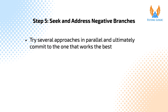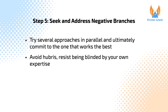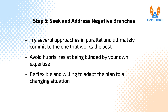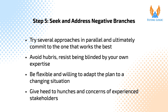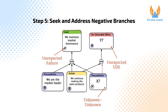If possible, try several approaches in parallel and ultimately commit to the one that works the best. Avoid hubris, nurture an organizational culture of humility, and resist being blinded by your own expertise. Be flexible and willing to adapt the plan to a changing situation. Give heed to the hunches and concerns of experienced stakeholders, even if those reservations are not clearly articulated. Even inarticulate reservations can be added to a transition tree as unspecified preconditions and removed later if they fail to manifest. Don't add unknown unknowns at every possible place, only where a strong but unspecific reservation has been expressed. Unknown unknowns can also be added as part of an assessment when planned effects fail to materialize as a plan is executed.